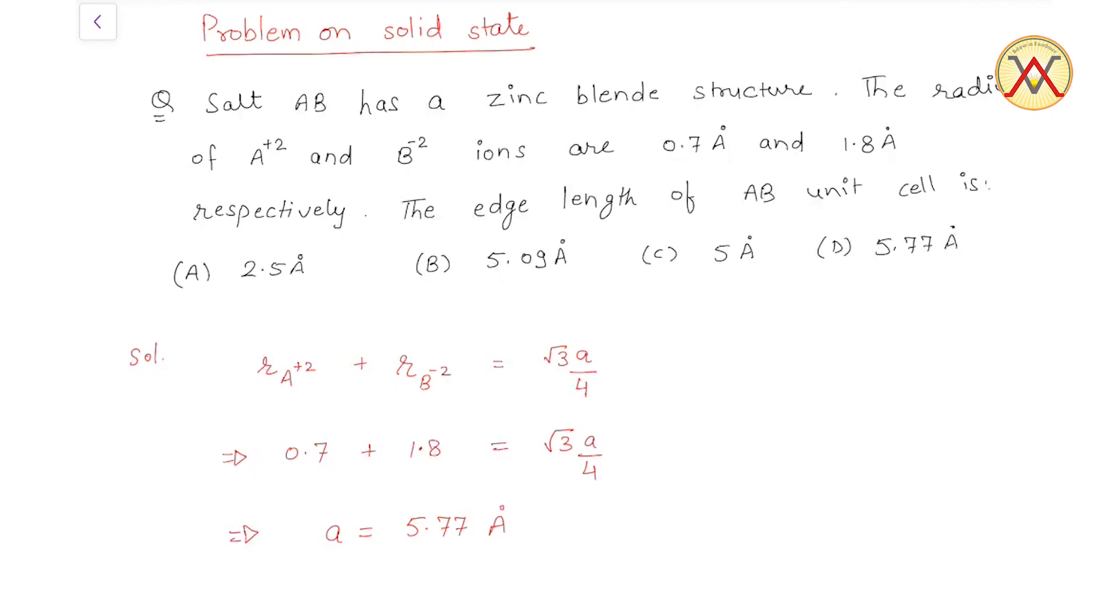Hello students, the question is: salt AB has a zinc blende structure. The radius of A²⁺ and B²⁻ ions are 0.7 angstrom and 1.8 angstrom respectively.